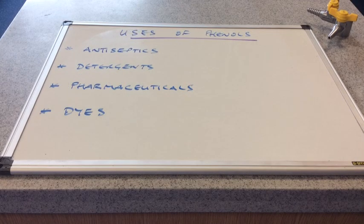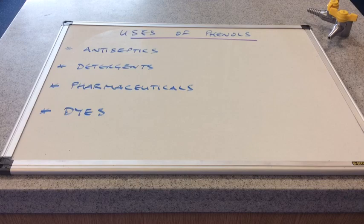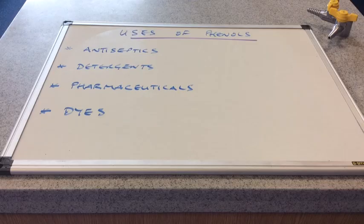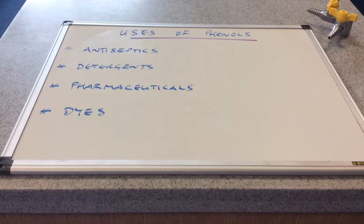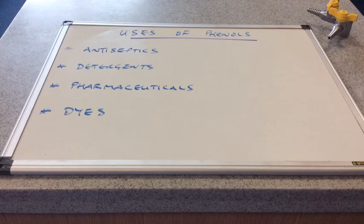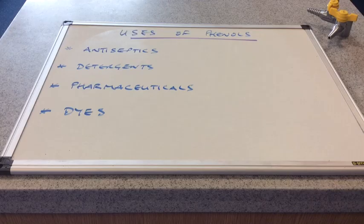And we'll just finish with some uses of phenols. So I've written four uses there. So the first one, antiseptics. So any of you interested in medicine, you may be interested to know that in 1870, Joseph Lister used carbolic acid, which is the old name for phenol. So he pioneered the use of that as an antiseptic in operations. And so before that, the risk of operation was a lot higher because there weren't any antiseptics.